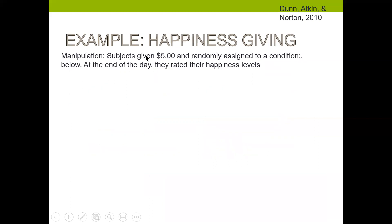Another example related to happiness and giving is a nice one for social psychology. Dunn, Atkin, and Norton were interested in studying this. Their participants were college students earning extra credit. They invited students to an office and gave each participant $5, then randomly assigned them to a condition.